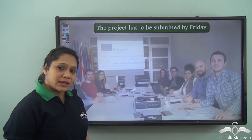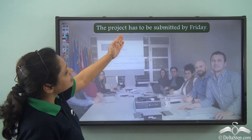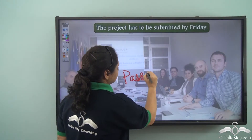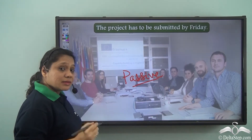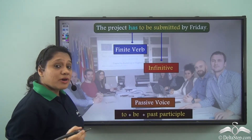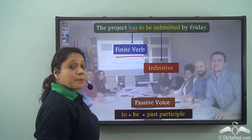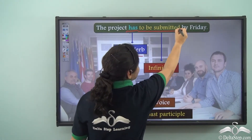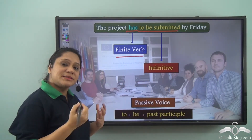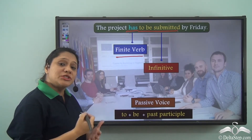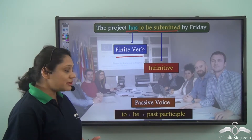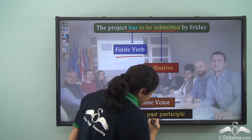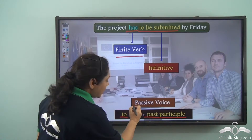Let us look at this example: 'The project has to be submitted by Friday.' This sentence is in the passive voice. 'Has' is the finite verb, and the infinitive here is 'to be submitted.' This is a special construction of the infinitive used in the passive voice — we add 'to,' then 'be,' with the past participle to form the infinitive in the passive voice.